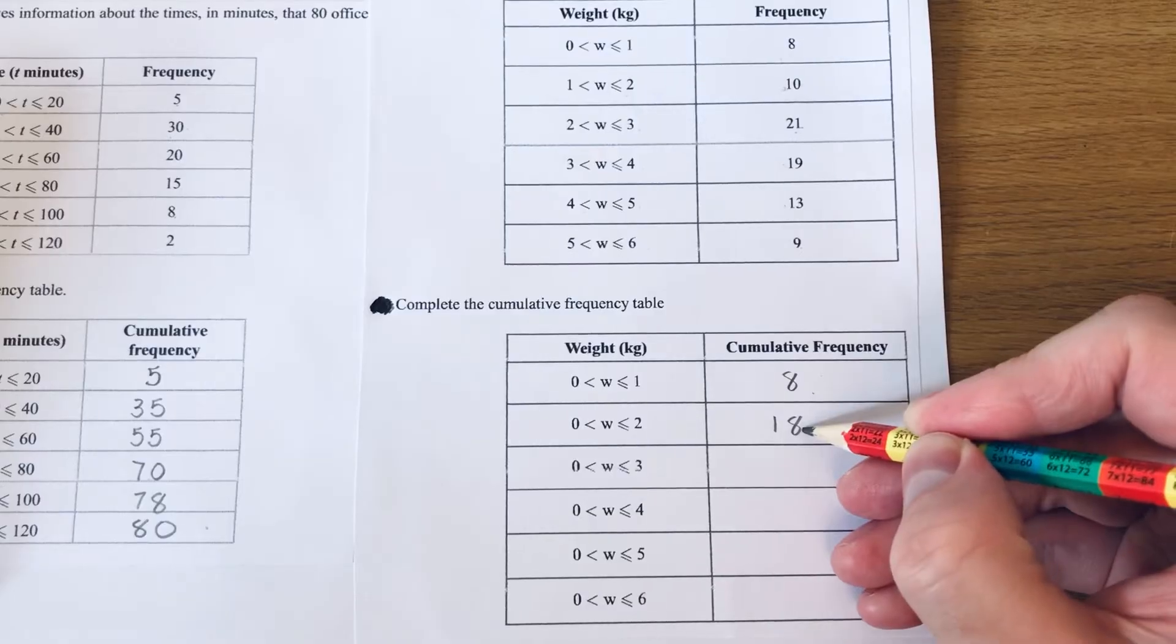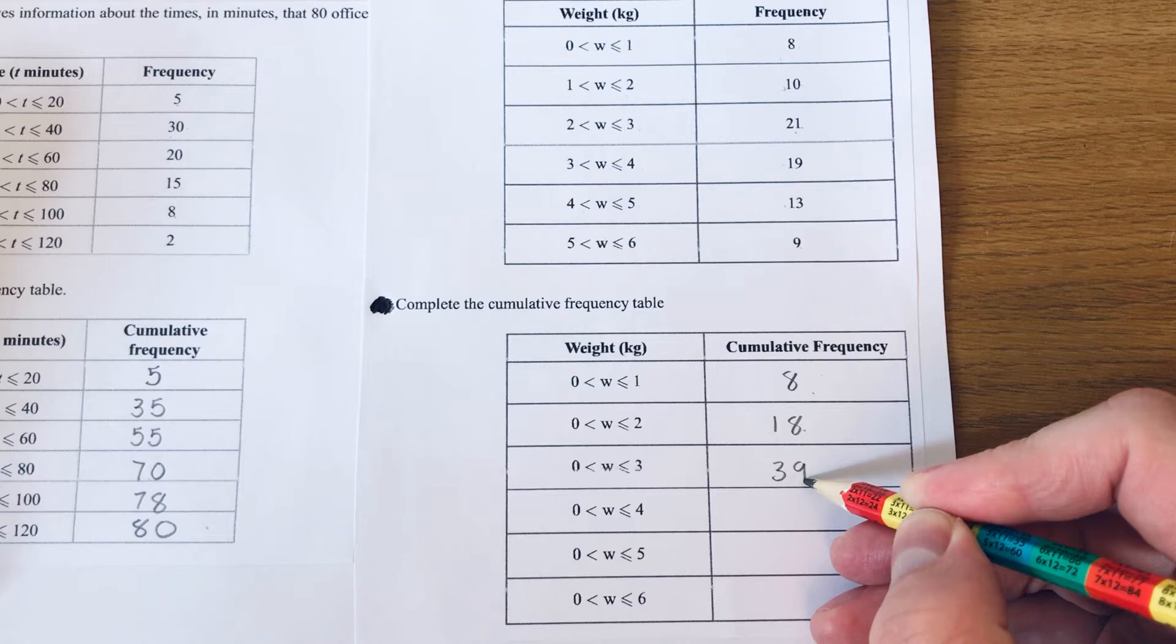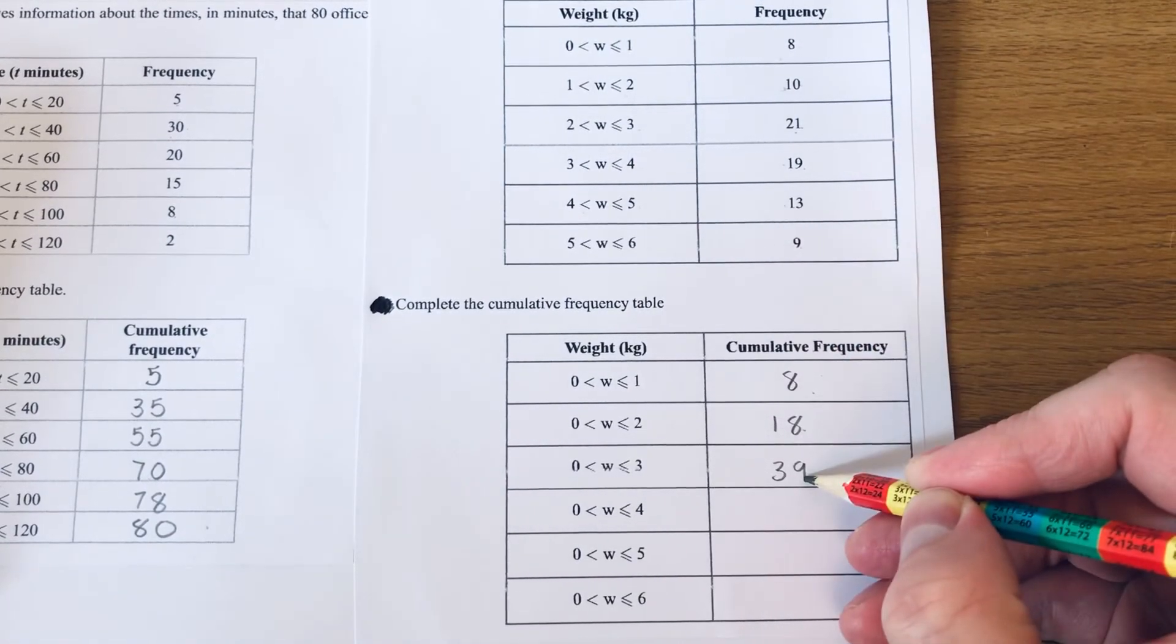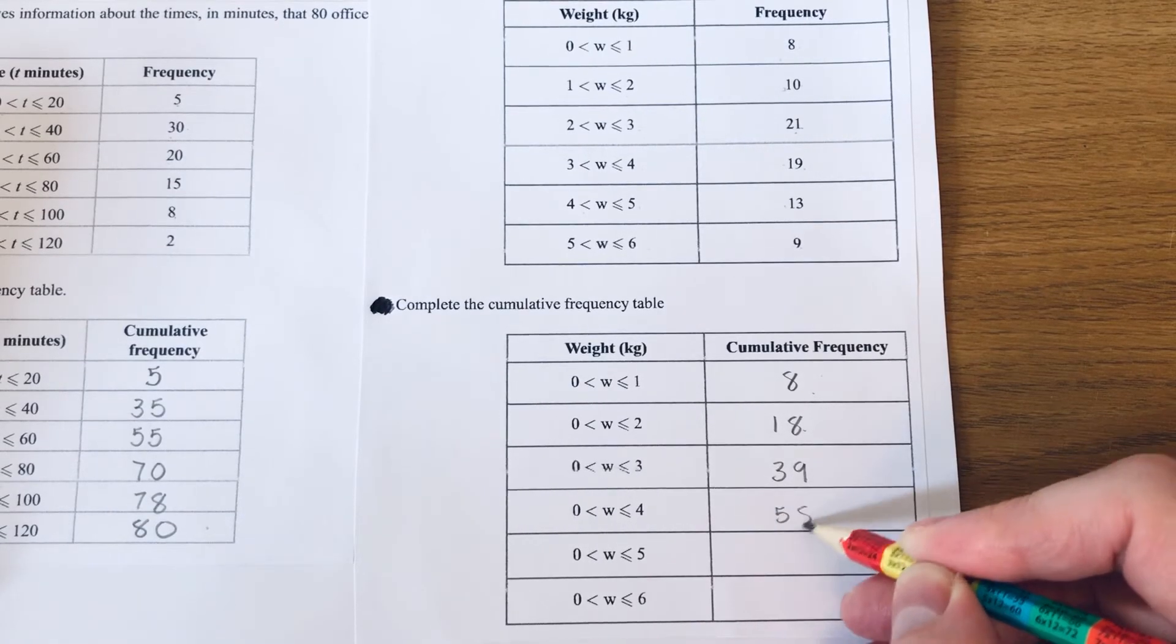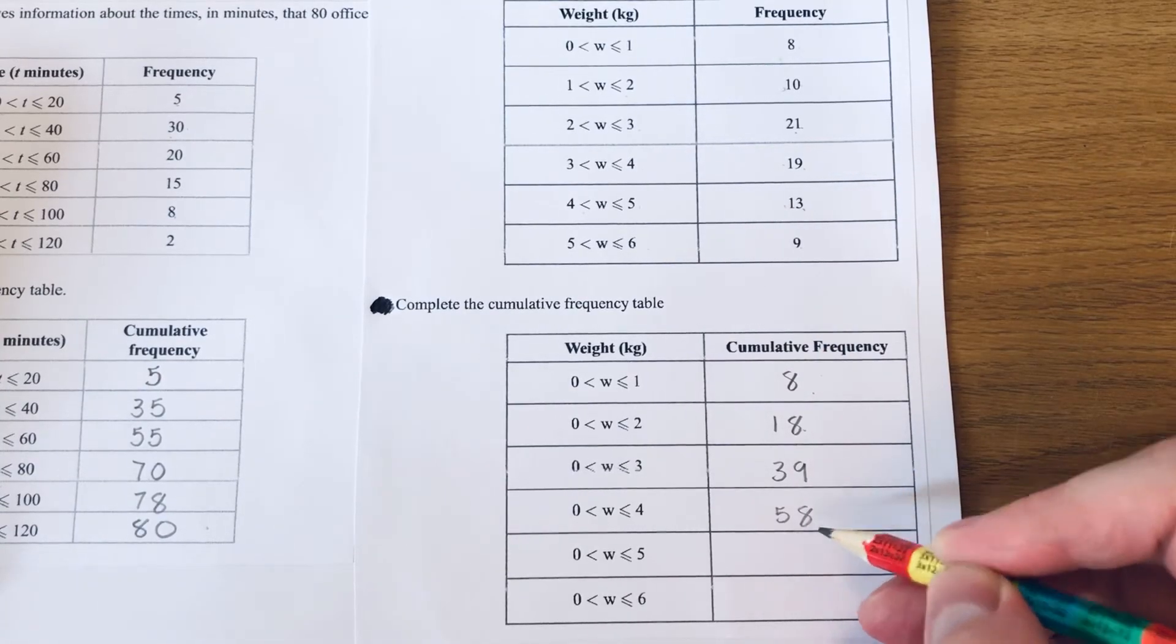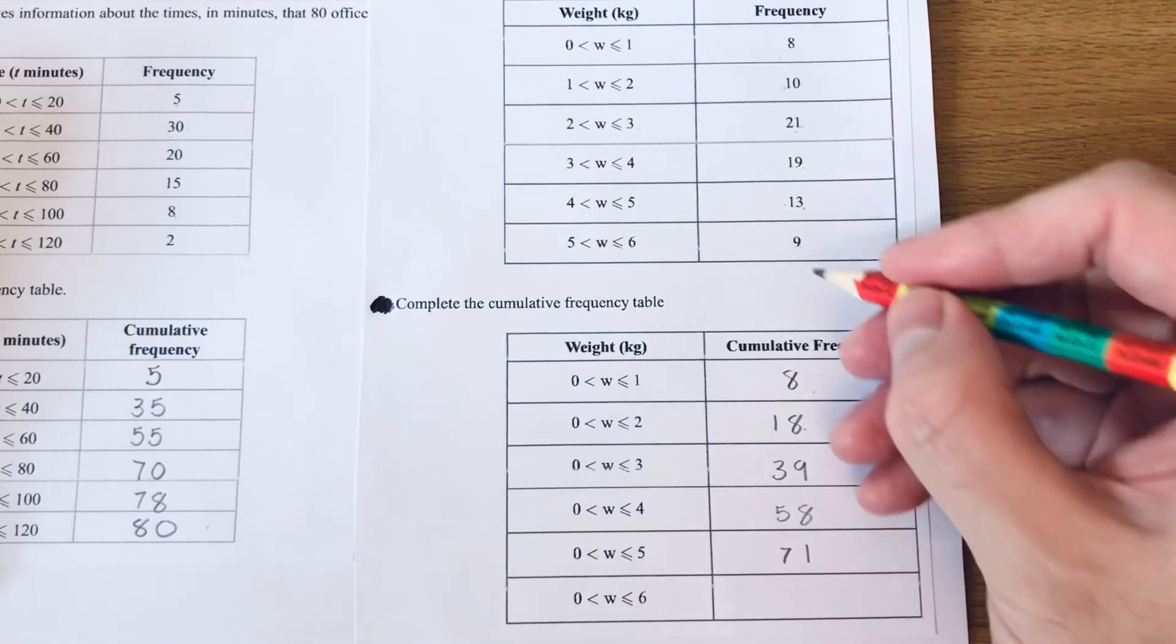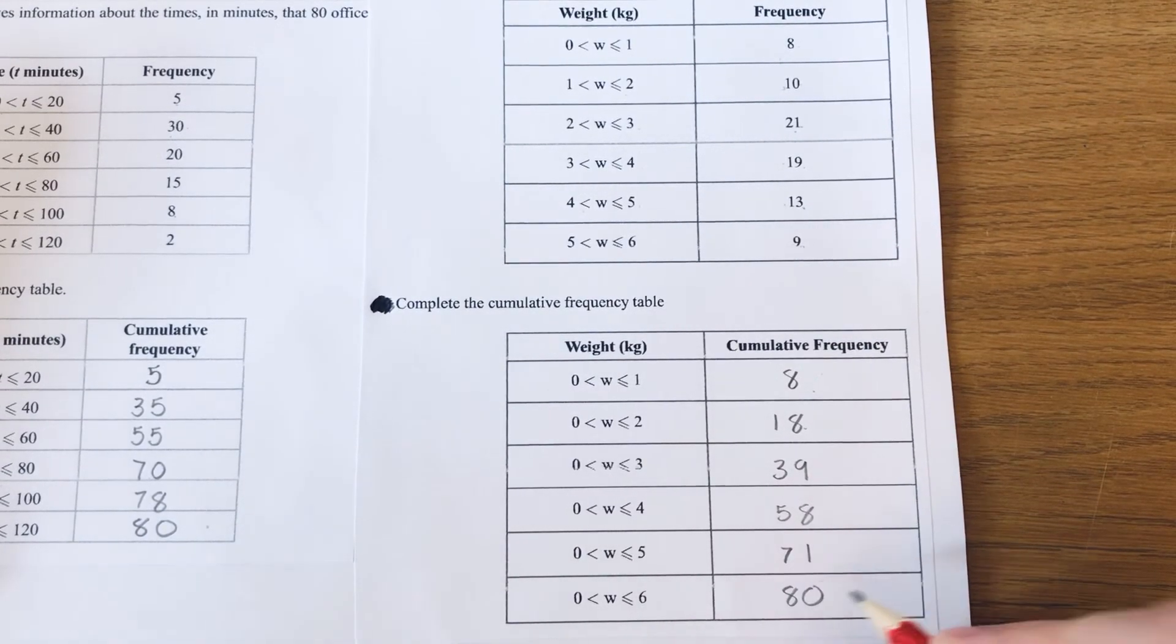Then we add on 19 to 39, which is 58. Then we add on 13 to 58, which is 71. And then add on the 9 to 71, which is 80. And that's our cumulative frequency table done for the second example.